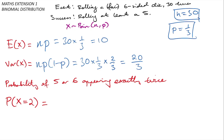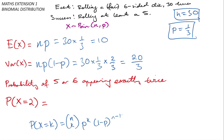If I want to find a probability — for example, the probability that I get a success exactly twice, meaning rolling a five or a six exactly twice — the general formula is C(n,k) times p^k times (1−p)^(n−k). So here I compute 30 choose 2, times (1/3)^2, times (2/3)^28, and that's pretty much all there is to it.